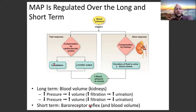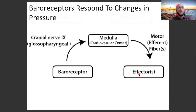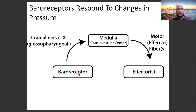Short-term regulation involves the baroreceptor reflex. All reflexes follow a reflex arc: receptor, sensory/afferent fiber to the integrator, which is the central nervous system, and then a motor/efferent nerve sends a message to affect change. In the baroreceptor reflex, baroreceptors are pressure receptors that detect the pressure of our cardiovascular system — they detect MAP. They're actually stretch receptors: the more pressure, the more stretch.